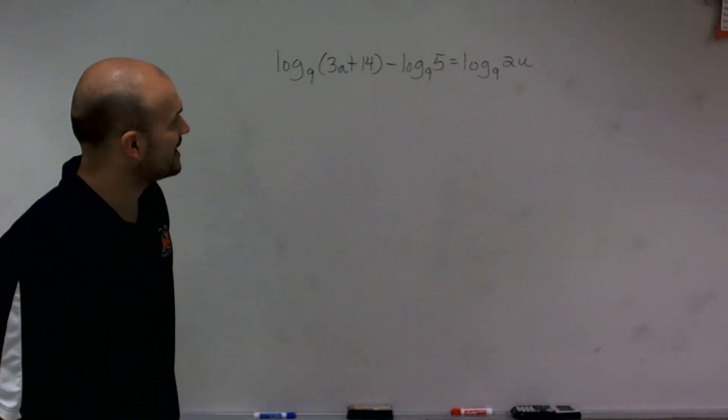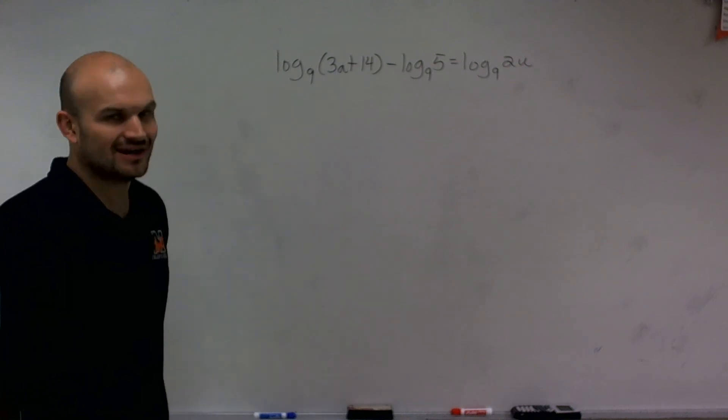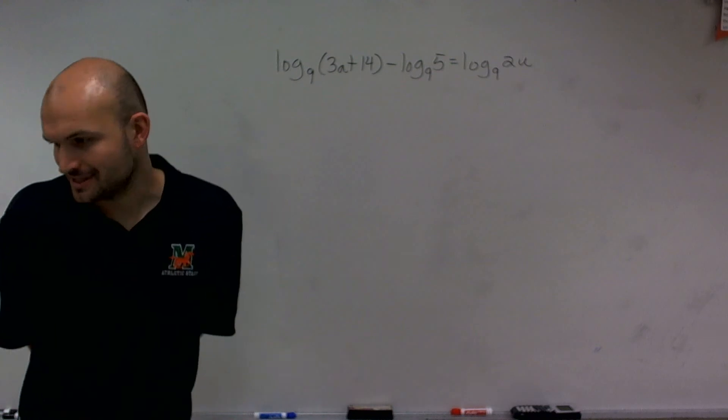So right now I have log base 9 of 3a plus 14 minus log base 9 of 5 equals log base 9 of 2u. There's an issue here.